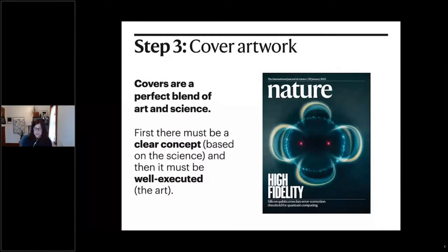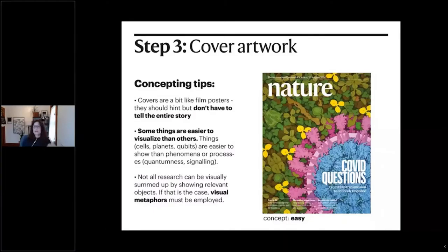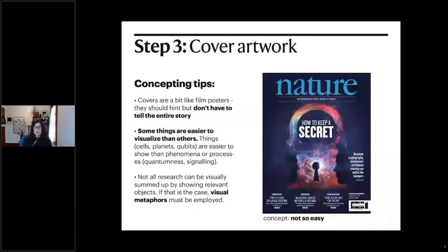It is true that some things are easier to visualize than others. Nouns — things like cells, planets, qubits, viruses — are easier to show than phenomena or processes, which are more like verbs. For example, 'quantumness.' For a paper on quantum cryptography, you have to bring in visual metaphors like a lock and glowing lights. Artwork tips: it needs to be high resolution, with a clean dynamic composition. Pick a point of focus, keep it simple, use good colors and contrast, and avoid red-green combinations that are problematic for color blindness.